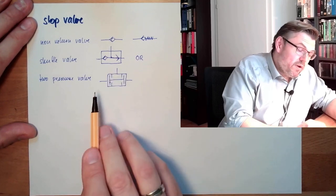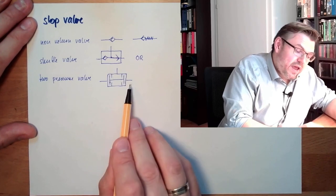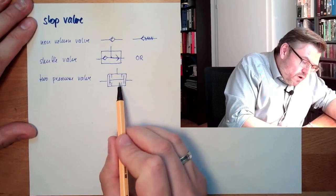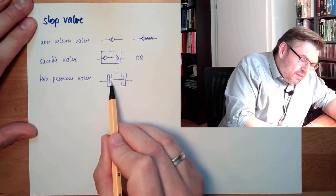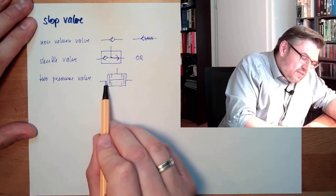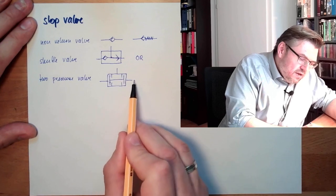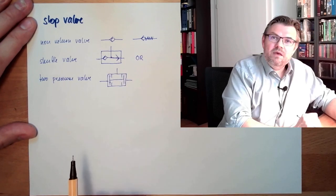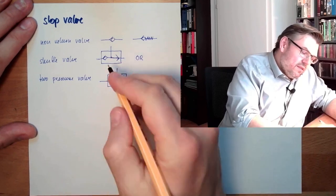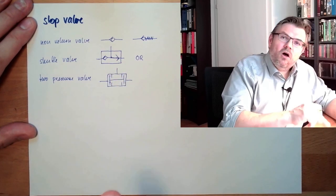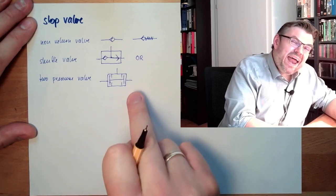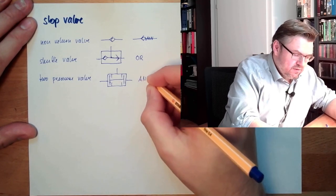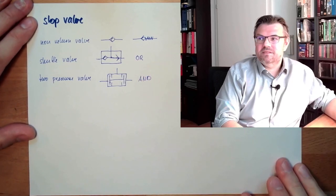But if pressure is coming on both sides — here is pressure and here is pressure — the first one or the stronger one wins, shifting the piston. The other side is connected through, and that pressure can go through and will appear at the output. So on the output of the valve, pressure will only appear if both inputs are pressurized. This is a logical AND combination of two pressure lines.